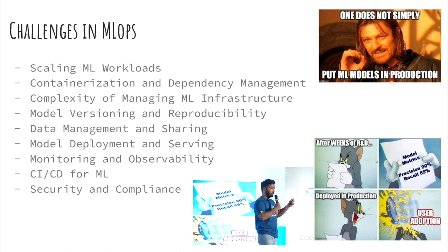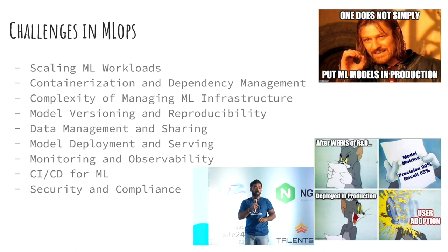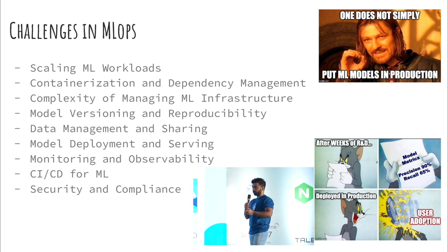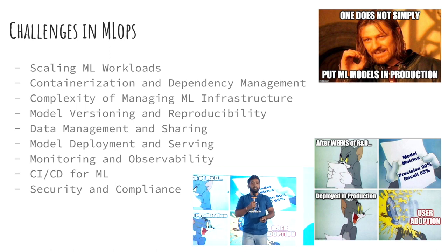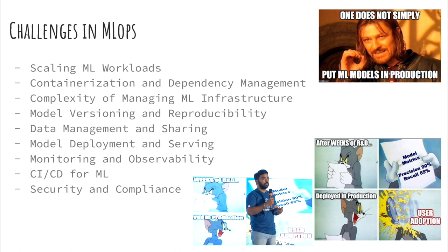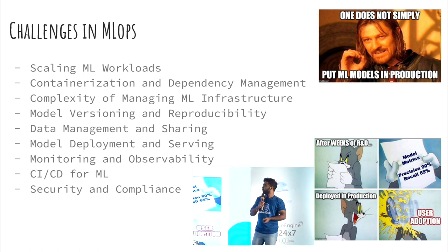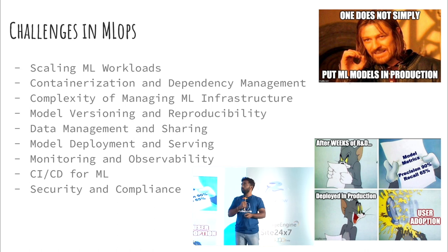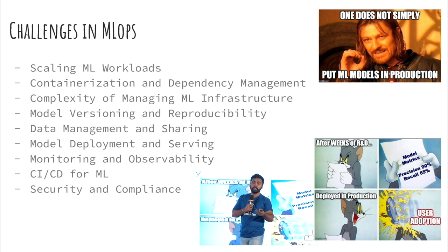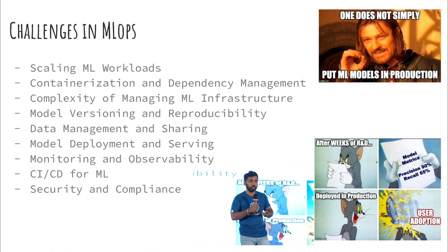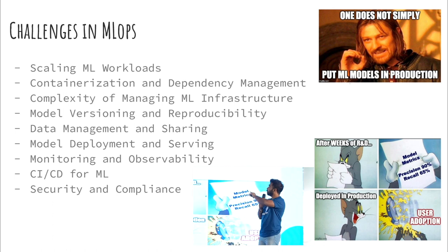Our today's talk is Kubernetes in ML. Kubernetes is what will help with scaling, and there's also the challenge of containerization and dependency management. There are a lot of problems to containerize machine learning models — it's a real pain point. Then there's ML infrastructure complexity: dealing with different types of infrastructure increases dependencies, cost, and infrastructure management overhead.